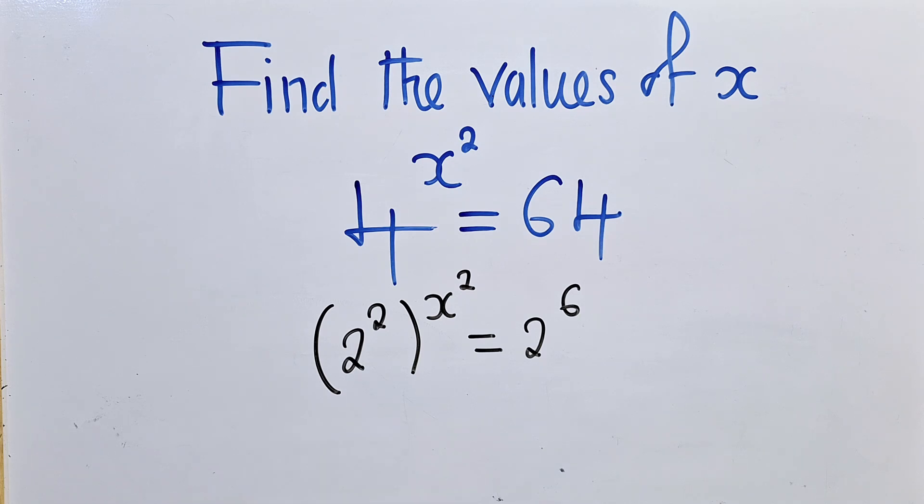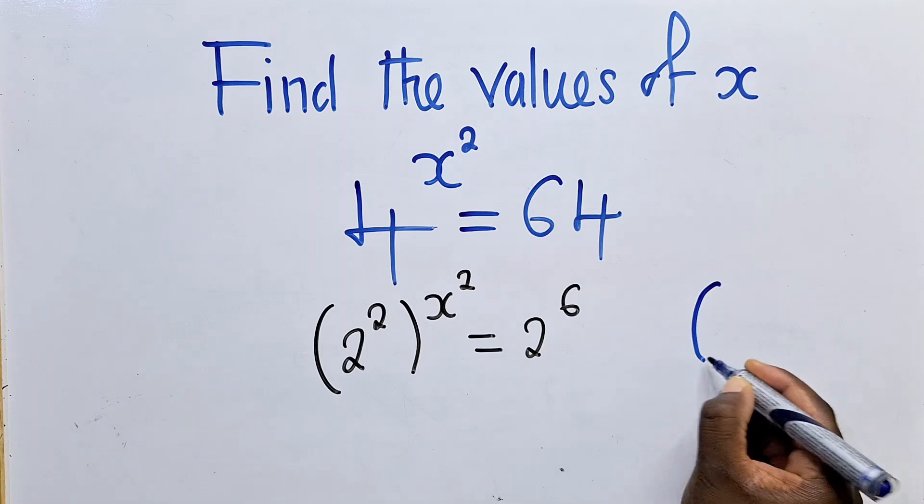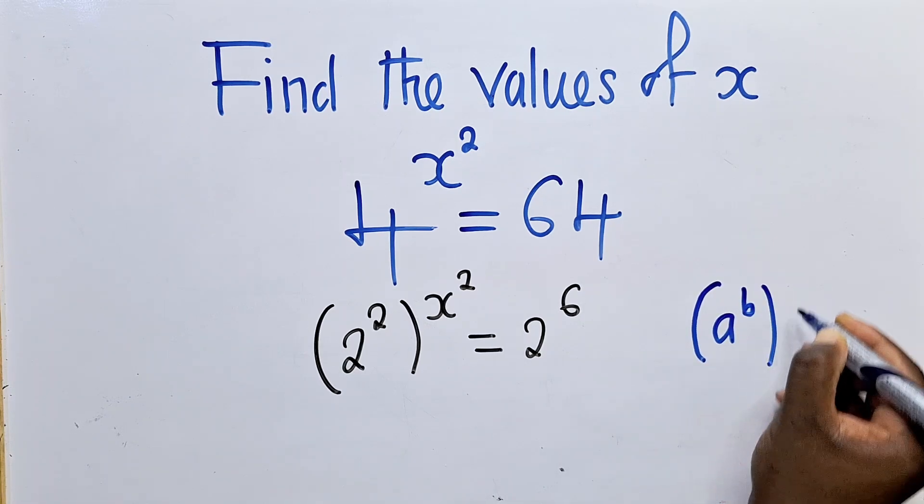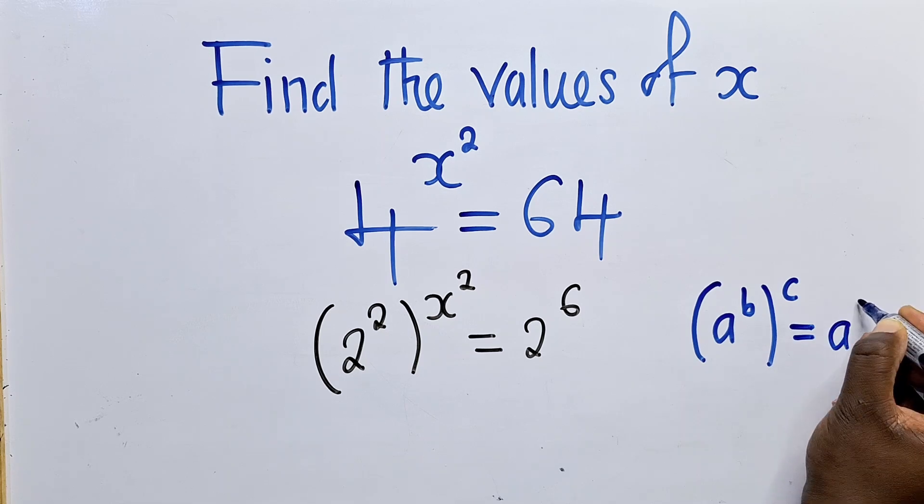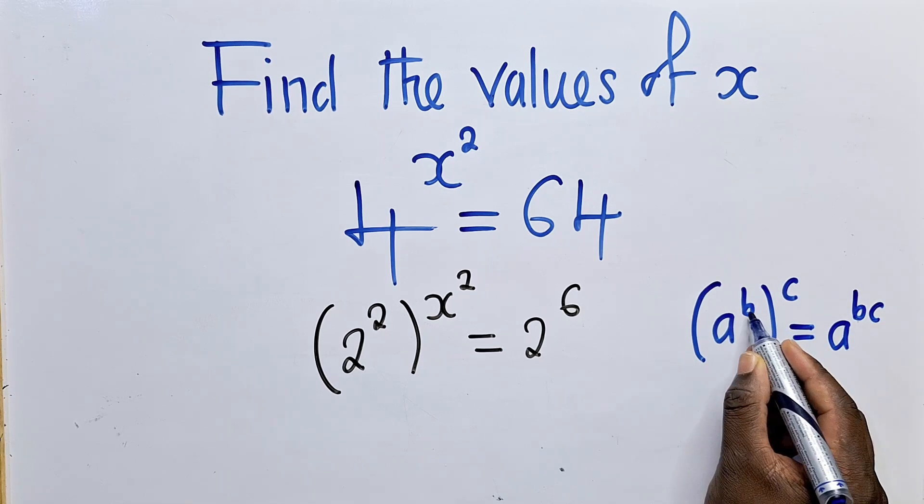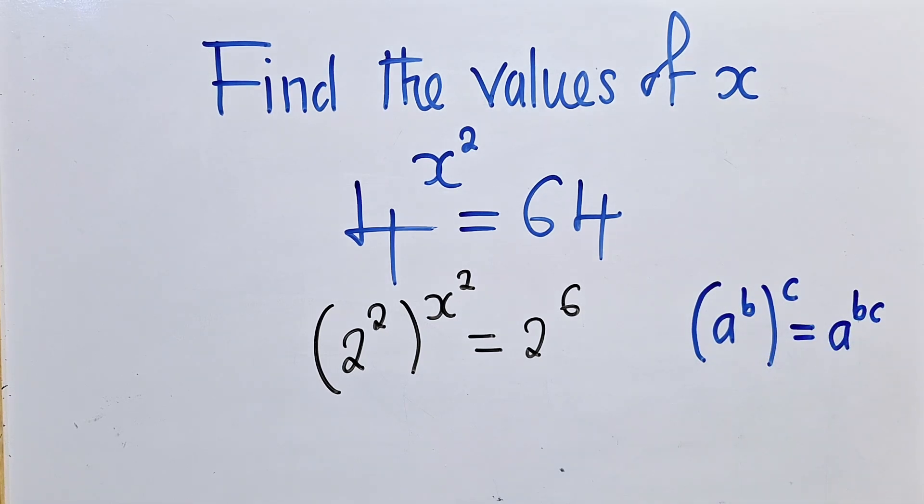Again, at this point, there is a property which says that when you've got a power b and c here, this will simply be equal to a power bc. Power to power you multiply.